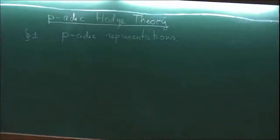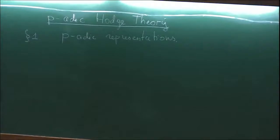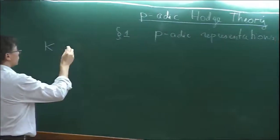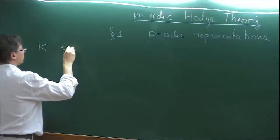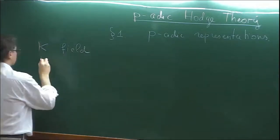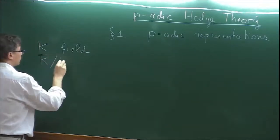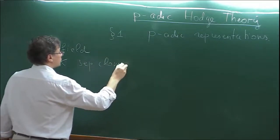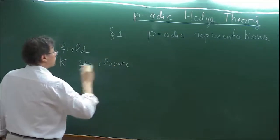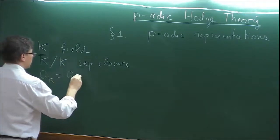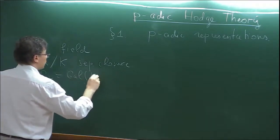Let me start with some general notation. Let K be a field. We fix a separable closure K-bar over K, and denote by G_K its Galois group — the absolute Galois group of K.